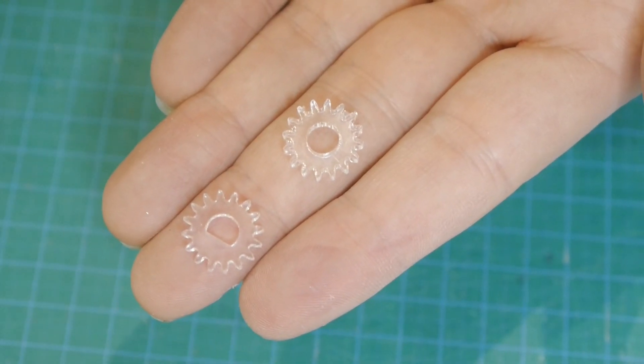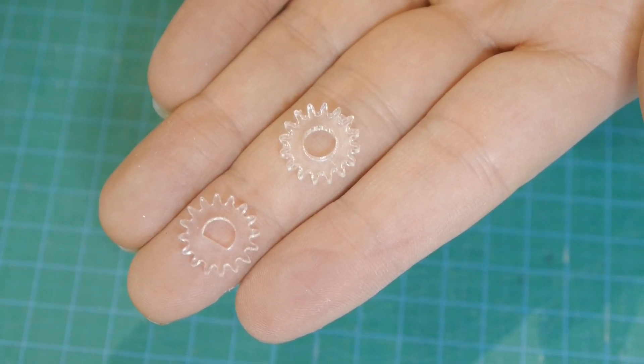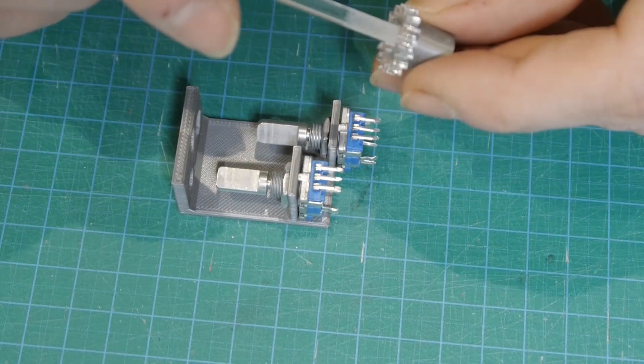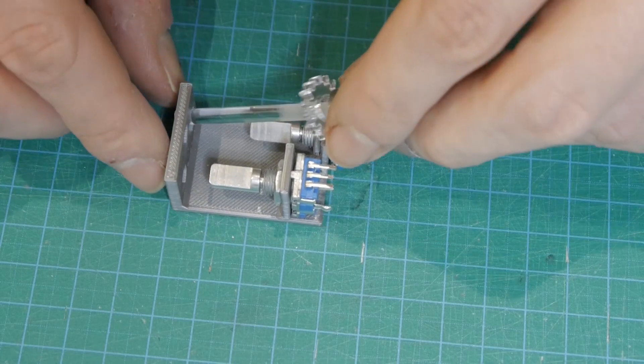You will need one gear with a D-shaped cutout and one with a 6mm hole. Now put the gear with a hole onto the shaft and connect the coupler with the first encoder.